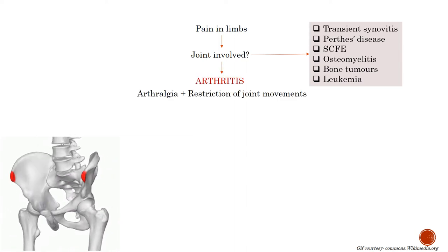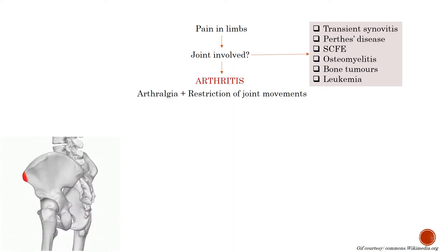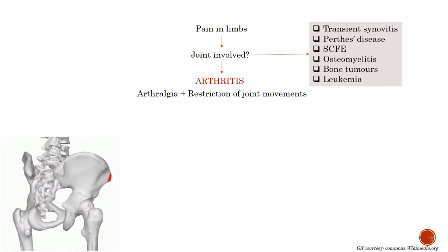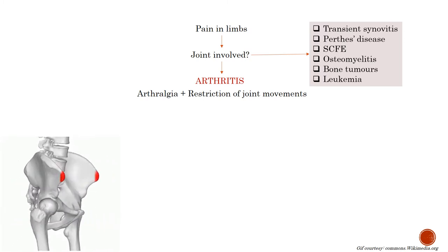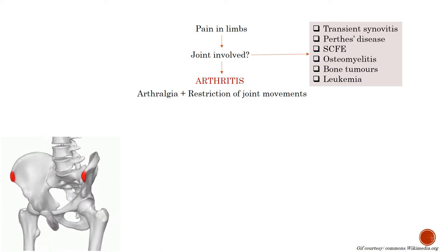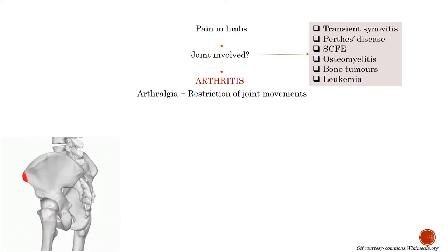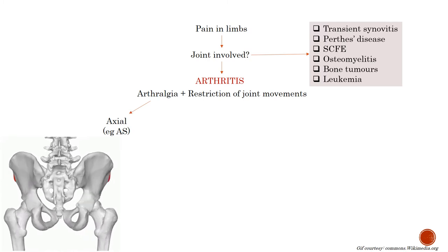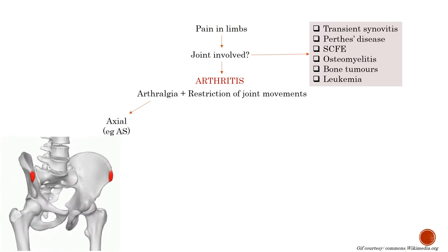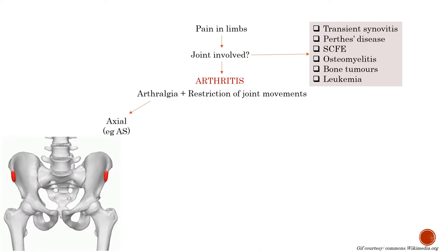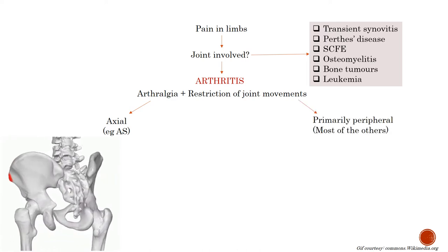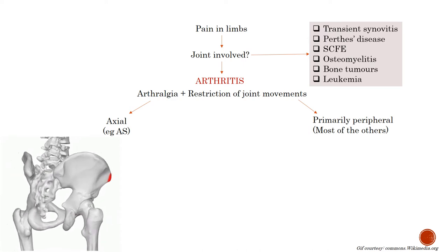If the joint is involved, you can call it arthritis, which is a combination of arthralgia — that is, pain in joints — along with restriction of joint movements. Next, you must identify which joints are involved. If axial, then examples are ankylosing spondylitis and some other spondyloarthritides. If primarily peripheral, then most of the other causes are usually peripheral only.